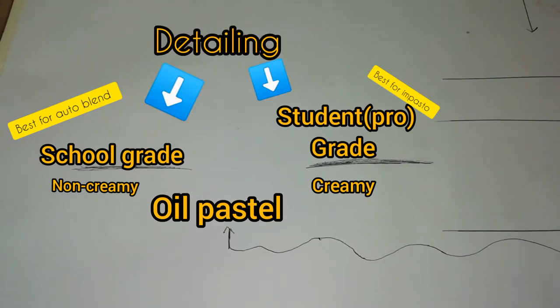If you ask me, I suggest using both types of oil pastel at the same time — school grade for base work and student grade for detailing at the end of the artwork. Before moving to the artwork, I want to remind you that I'm going to use all the techniques from my previous videos: saturation, lightening, darkening, diluting, impasto, strokes, and dots. I'm not going to use sgraffito in this artwork. If you don't know about these techniques, check my previous video or wait for my upcoming one.